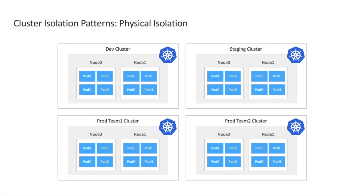There are two isolation patterns that you can use in Kubernetes. The first pattern is physical isolation, in which you dedicate clusters based on the environment, like dev or staging, or cluster per team, or cluster per project. Each workload is contained within its own cluster. In this example, we have two clusters, one for dev and one for staging, and in production, we have two clusters for team one and team two.